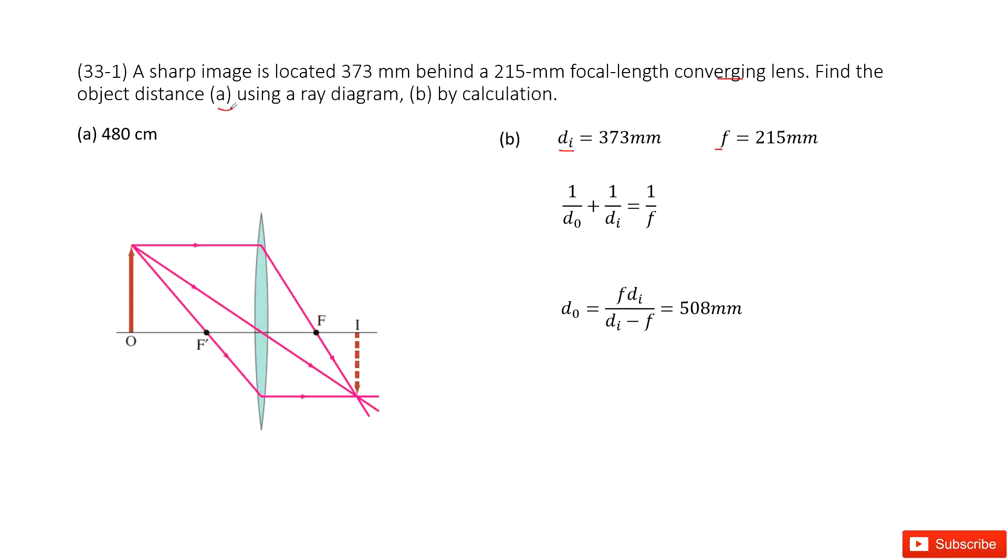The first method, you can find it by plotting pictures. We plot the pictures for this converging lens and we can find the two focal points f, right, f plus. These two points are determined.